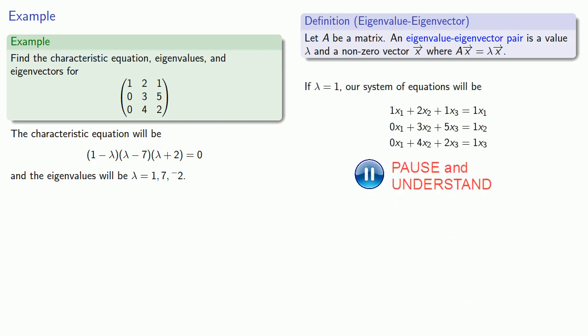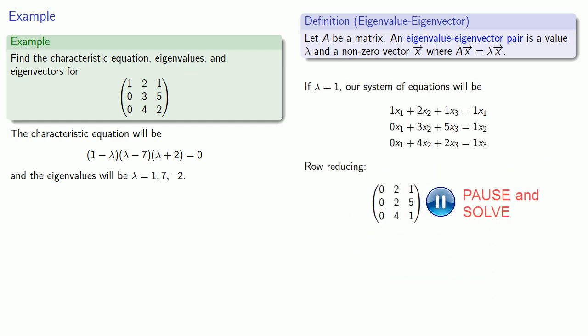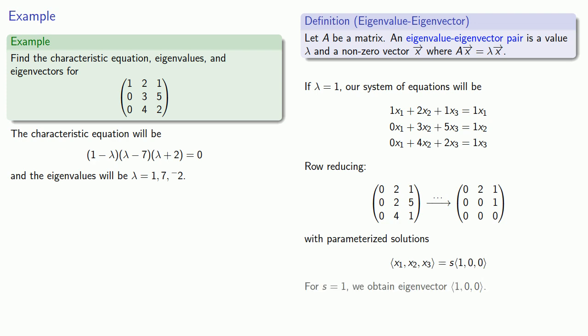We can then row reduce that system of equations and get our parametrized solutions. Since we only need to find one of the eigenvectors, we'll let s be 1. That tells us that eigenvalue 1 has eigenvector (1, 0, 0).